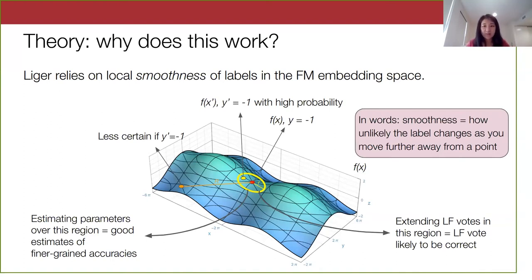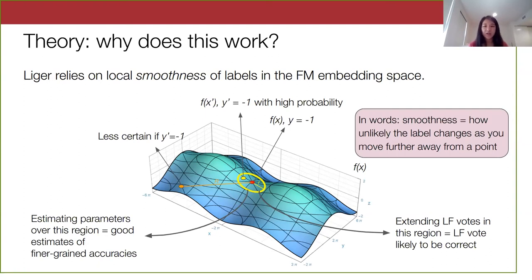This all makes natural sense in the context of our method. If we have a very smooth embedding space, when we estimate parameters over a small local region, the data distribution within that region is well-behaved and not changing significantly. So we won't see crazy changes in the spam versus not-spam distribution locally, and we can estimate finer-grained accuracy parameters well. On the abstain side, if we extend the labeling function within a small region where labels aren't changing much, we'd expect the extended vote to be correct — if a labeling function is correct on x and we extend that vote to a nearby point with the same label, the extension provides good signal.